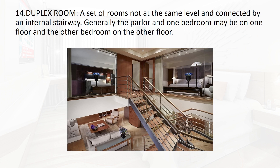Next is the duplex room — a set of rooms not on the same level, connected by internal stairways. Generally, one bedroom may be on one floor and another bedroom on another floor. The rooms are connected by internal staircases: at the bottom you find the seating area, and at the top are the bedrooms.